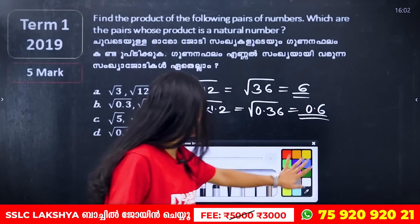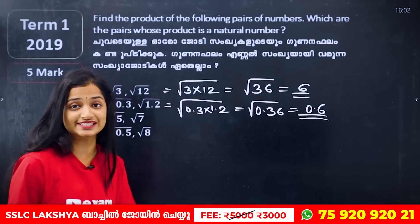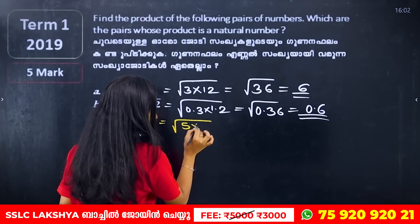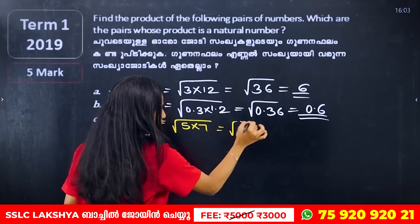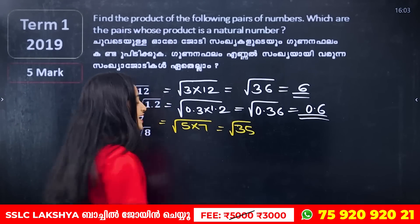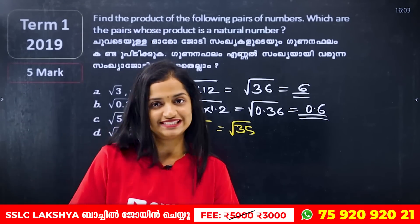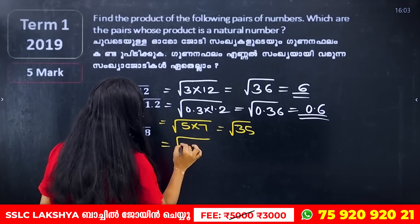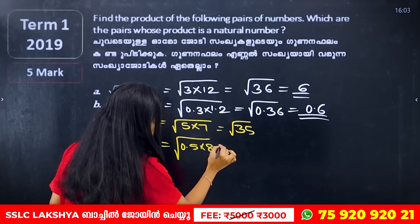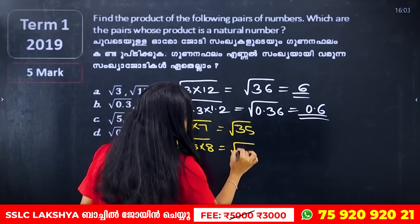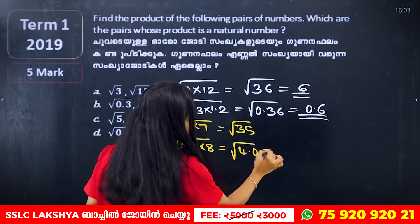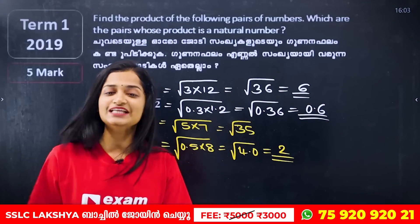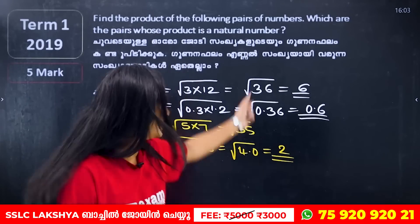The next question is root of 5 into root of 7. The answer is root of 35. 35 is not a perfect square, so we cannot simplify it further. The next question is root of 0.5 into 8. Root of 4.0, which is root of 4, equals 2. So the answer is 2.